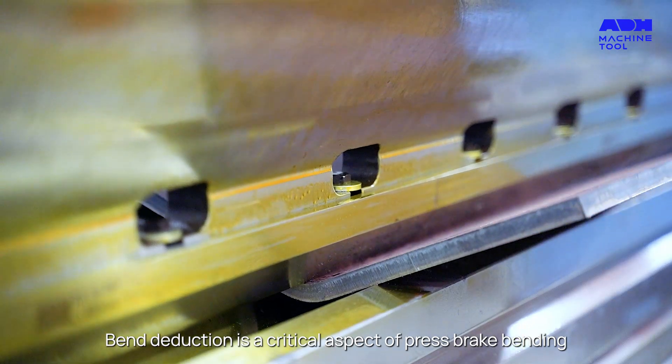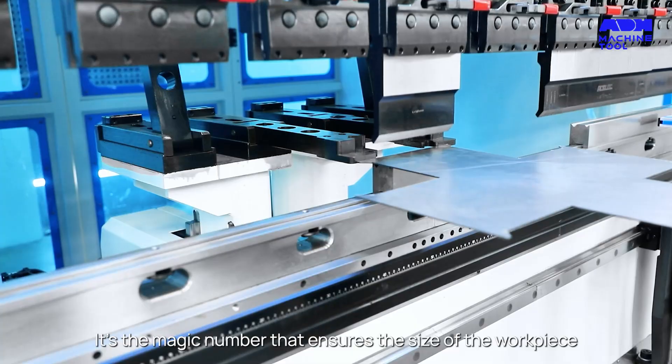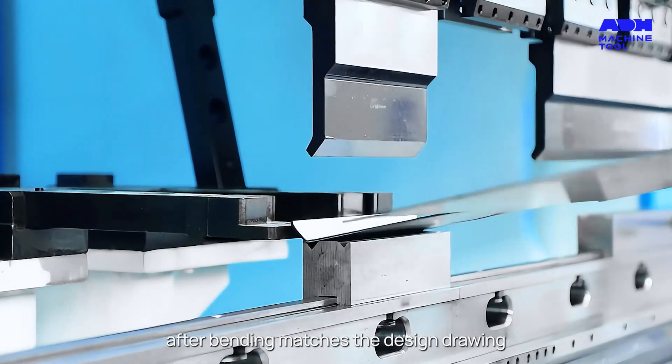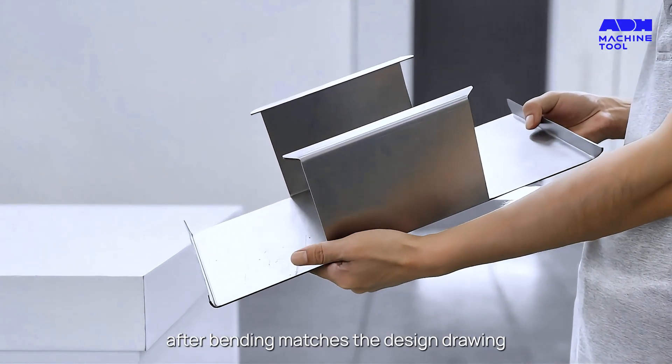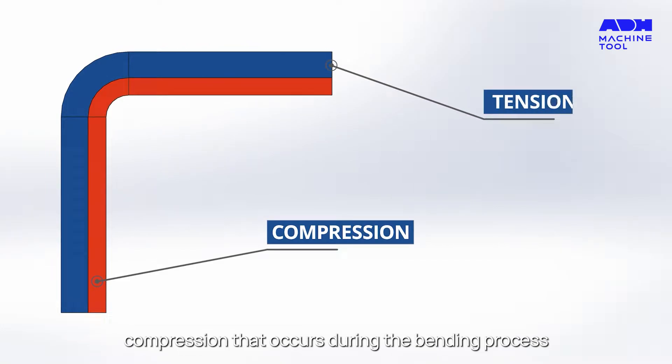Bend deduction is a critical aspect of press-break bending. It's the magic number that ensures the size of the workpiece after bending matches the design drawing. It accounts for the elongation and compression that occurs during the bending process.